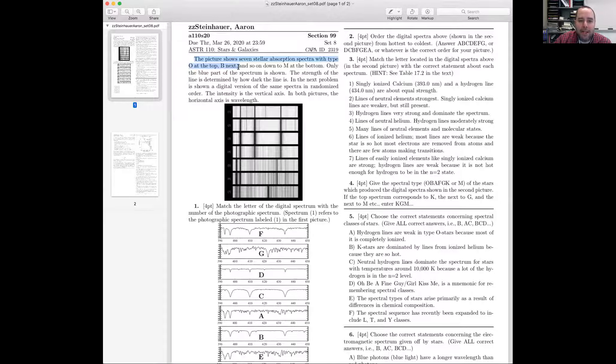The hint here is at the very top, the picture. So seven absorption spectra with O at the top and B next and so on down to M. These are in order: O, B, A, F, G, K, M. So number one is the hottest and number two is the next hottest and number three is the next hottest.